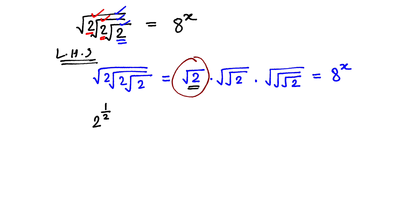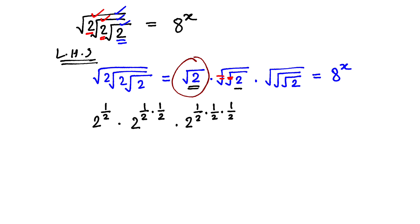The second 2 can be written as 2 raised to the power 1 by 2, and the power can be multiplied again by 1 by 2 because there are two roots. Accordingly, the third 2 will have powers 1 by 2 multiplied by 1 by 2 multiplied by 1 by 2, which is equal to 8 raised to the power x.